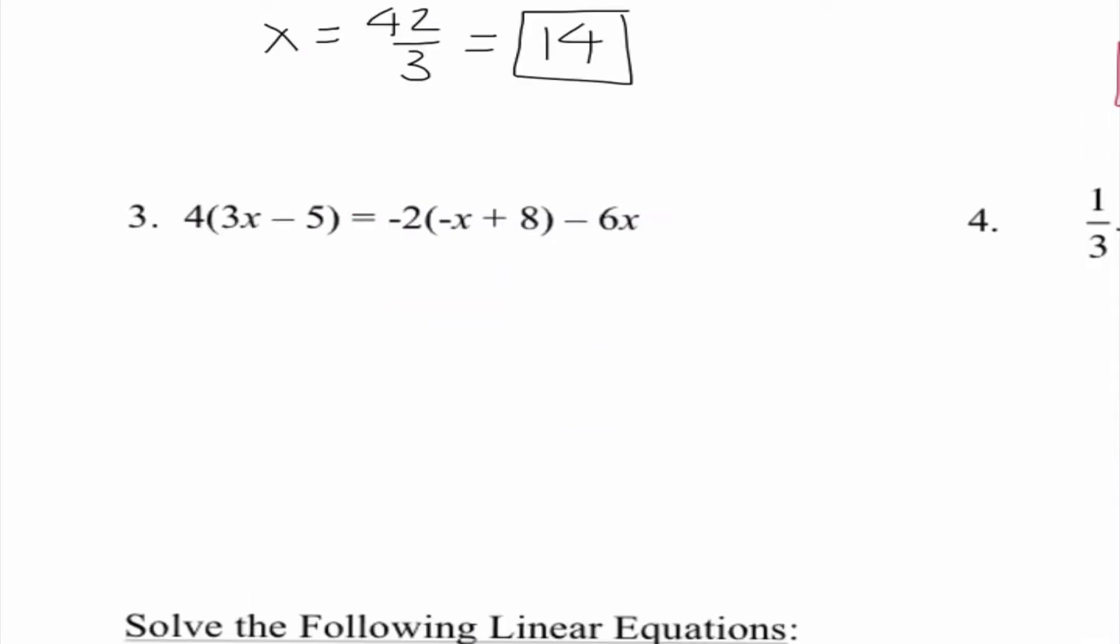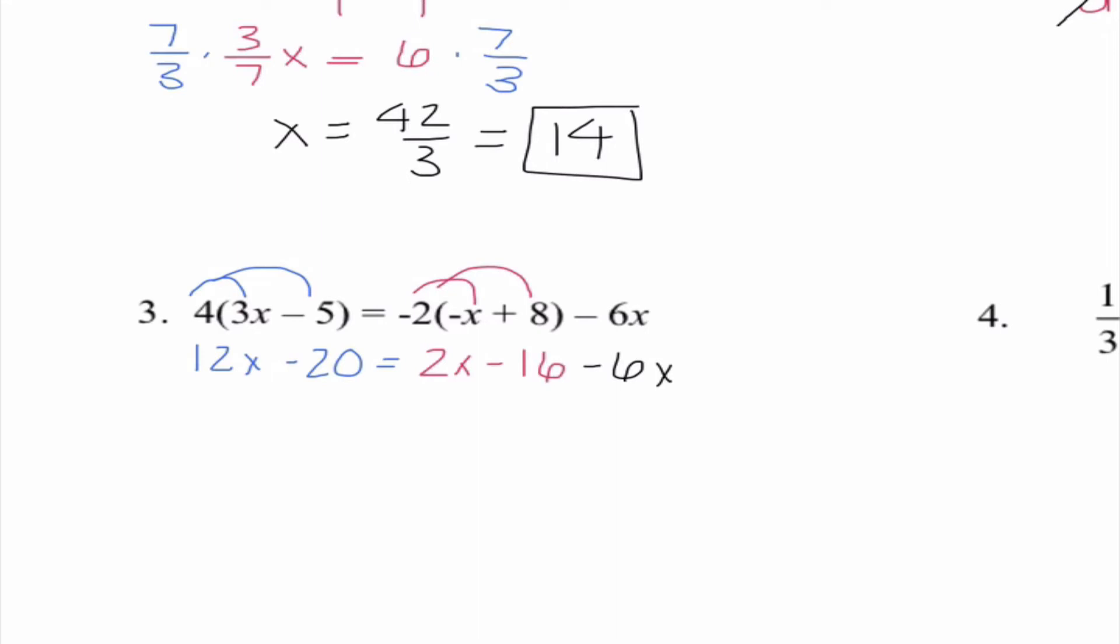Number 3 is a doozy, just because this is the one that I see a lot of students mess up on. So I want you to pause the video and do this one on your own and then check back with me and double-check your work. So I started by distributing the 4 and distributing the negative 2, and that's the place that often we mess up. So I end up with 12x minus 20 equals 2x minus 16 minus 6x. Now I'm going to combine my like terms on each side. So I have 12x minus 20 equals -4x minus 16.